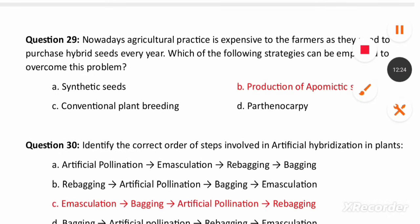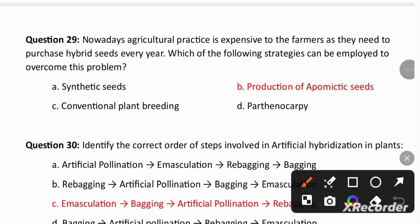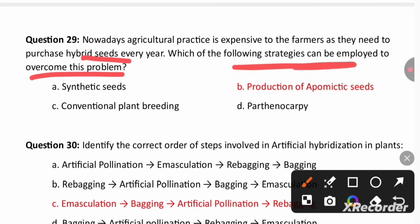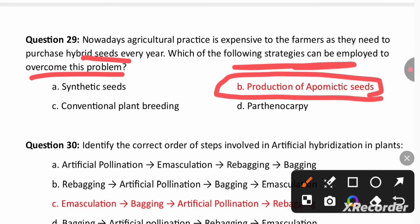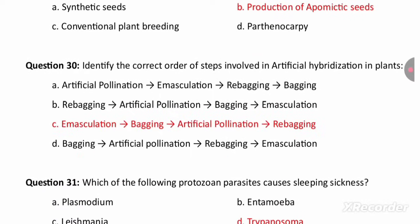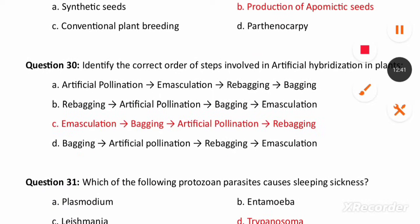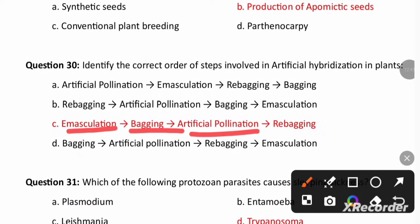Agricultural practice is expensive for farmers as they need to purchase hybrid seeds every year. To overcome this problem, apomixis — production of seeds without fertilization — is the best solution. The correct steps involved in artificial hybridization are emasculation, bagging, artificial pollination, and then re-bagging.